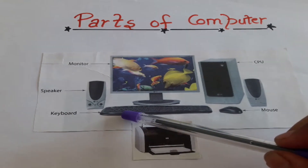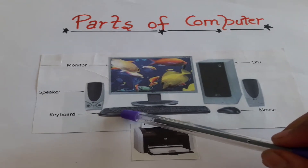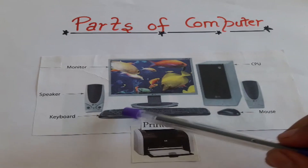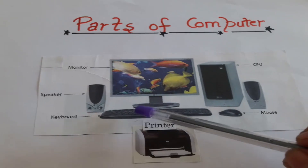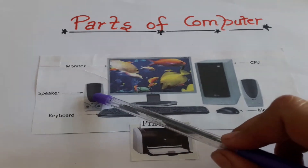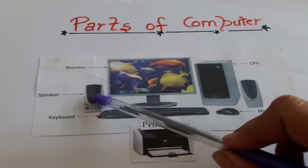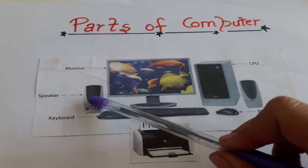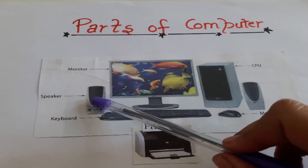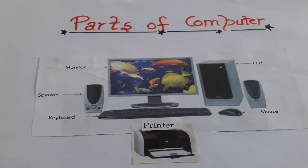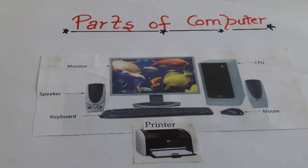What is this? This is keyboard. We can type through keyboard, we can do the typing. And what is this? This is speaker. We can listen to music. Now very good children.